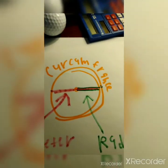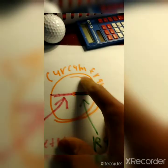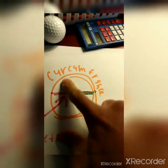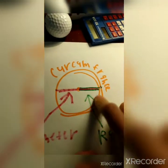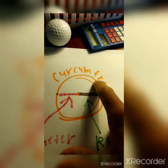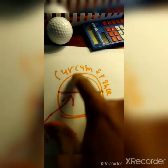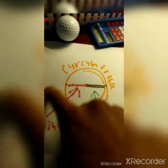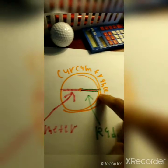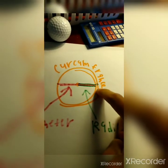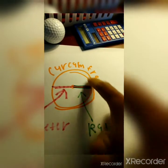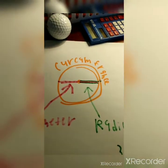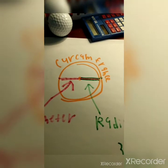The last definition we're going to understand before we do the formula and the math is called the circumference. The circumference measures the perimeter of the circle — it measures what's outside the circle and the length around it. Here's an example.